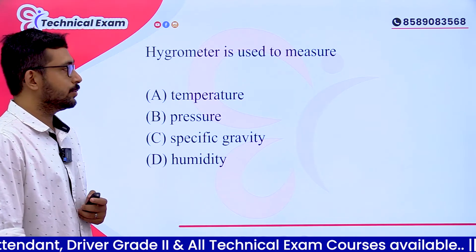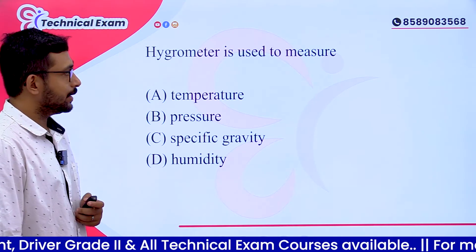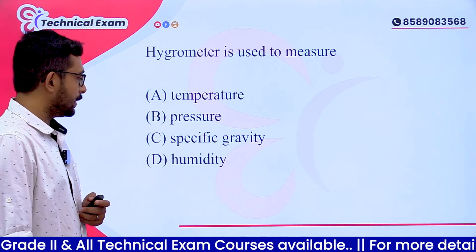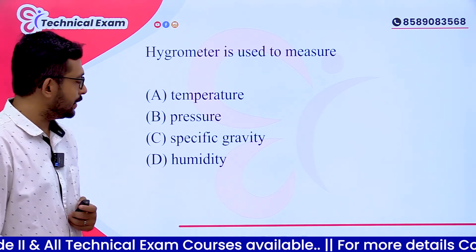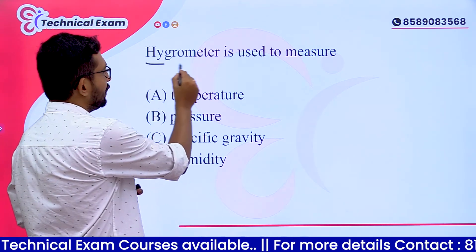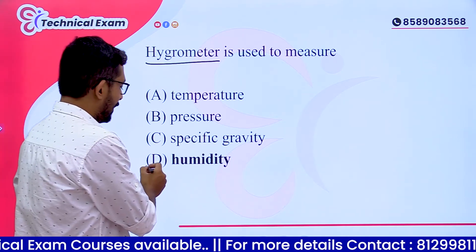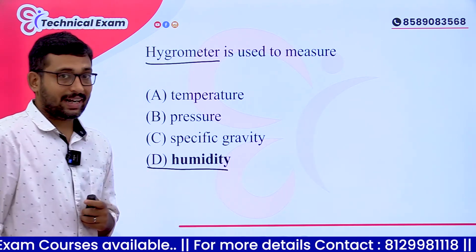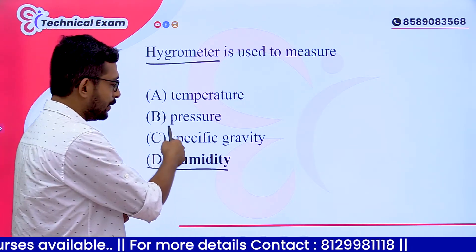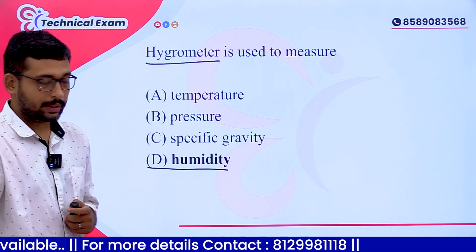A hygrometer is used to measure — options: A. Temperature, B. Pressure, C. Specific Gravity, D. Humidity. A hygrometer is used to measure humidity. This falls under measurement and instruments.